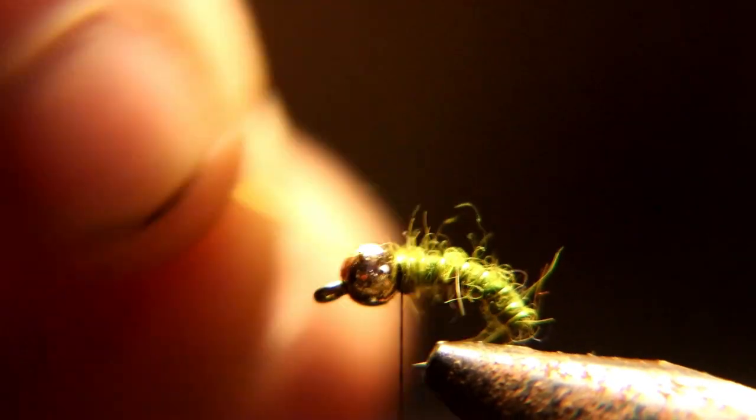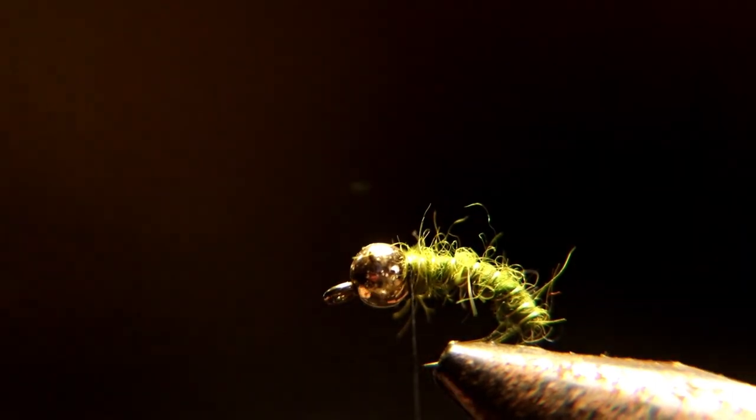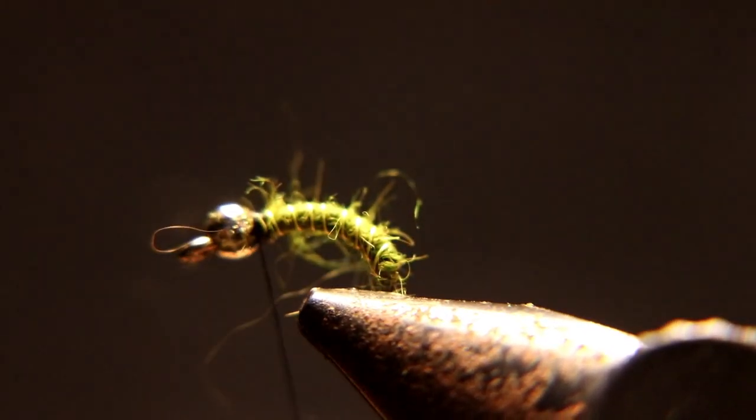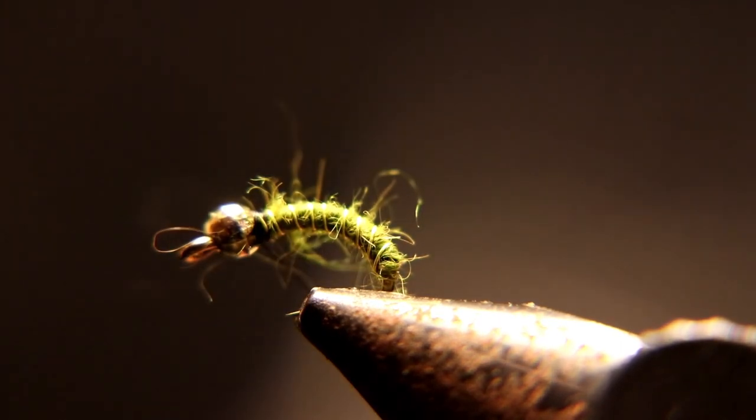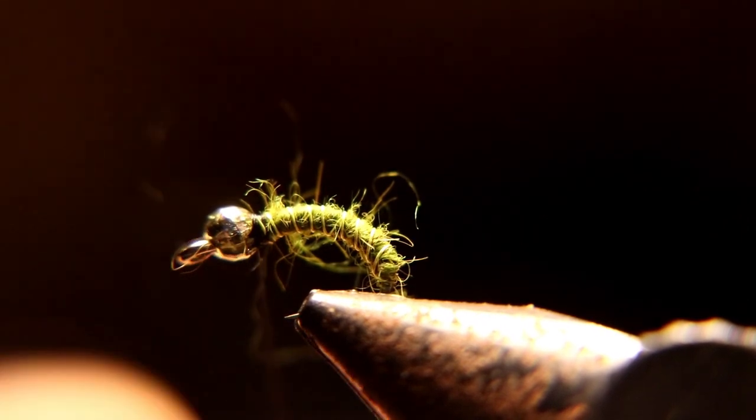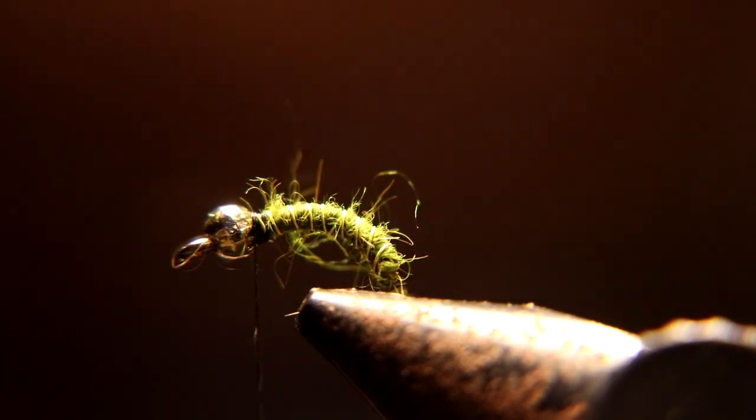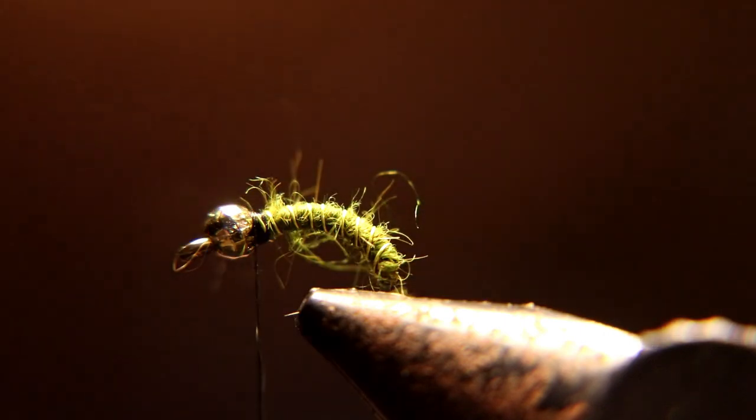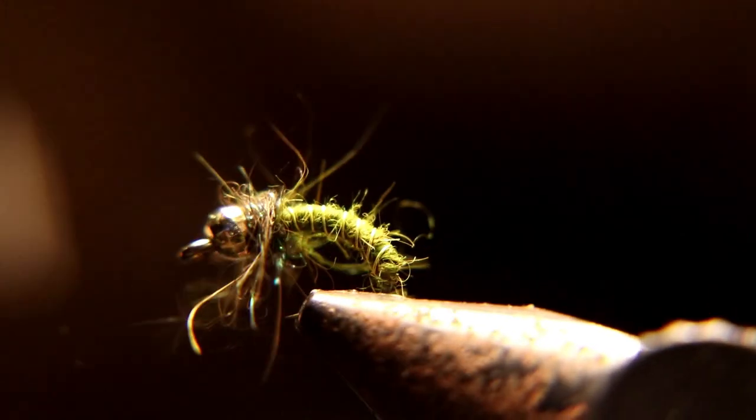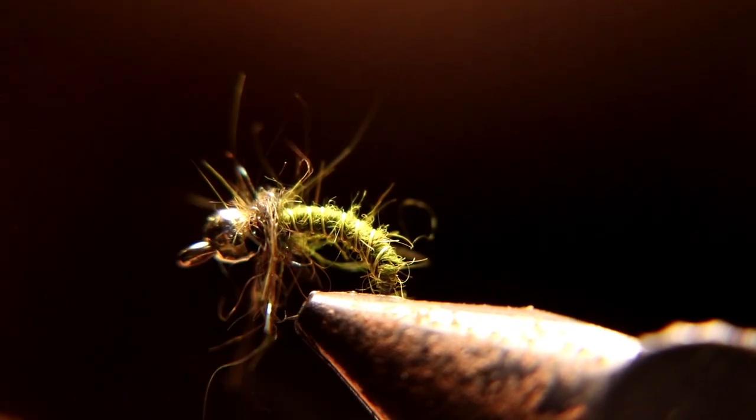Break off your wire. Now you take some of this really dark olive, almost black dubbing, and dub a little bit behind the bead. Throw one or two whip finishes in it.